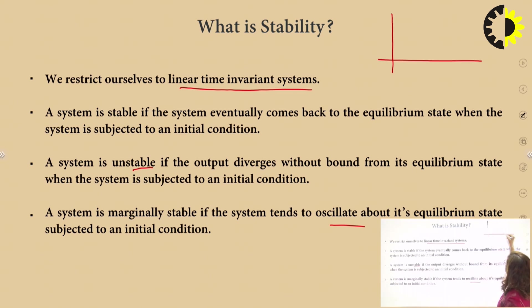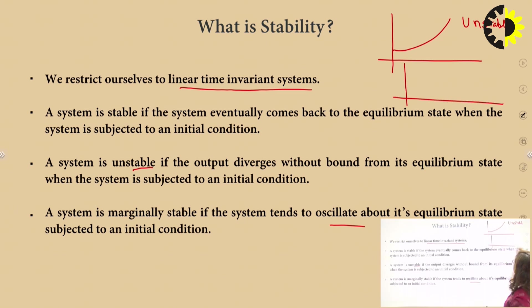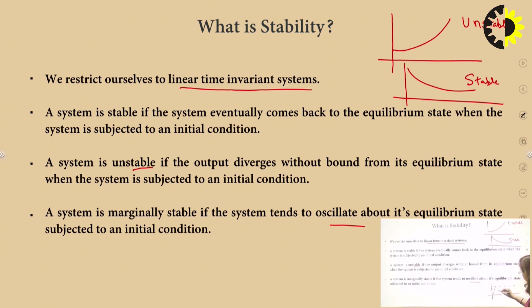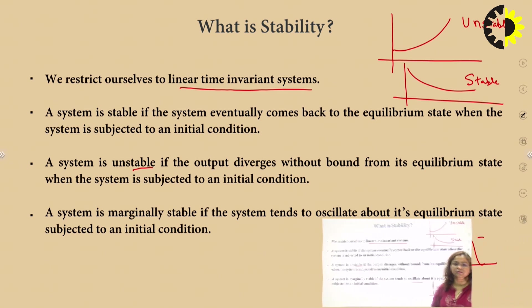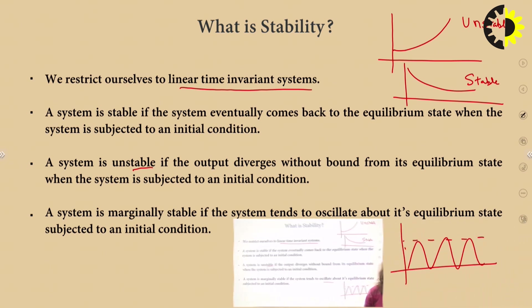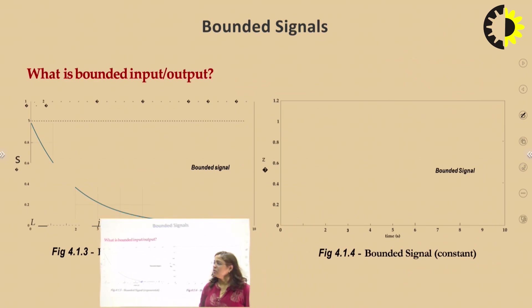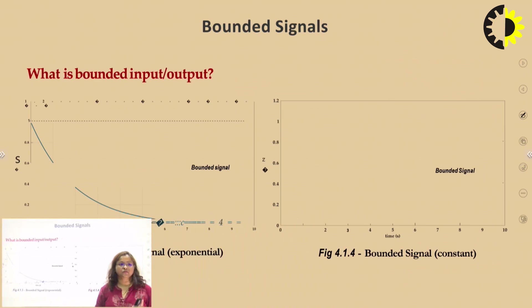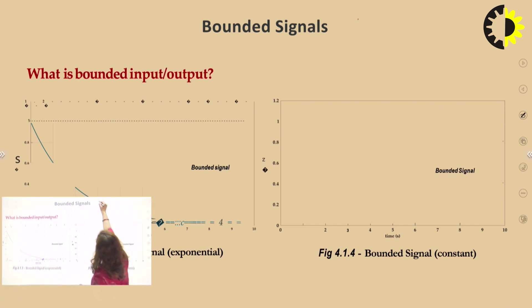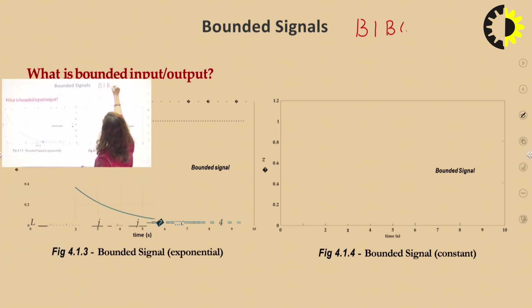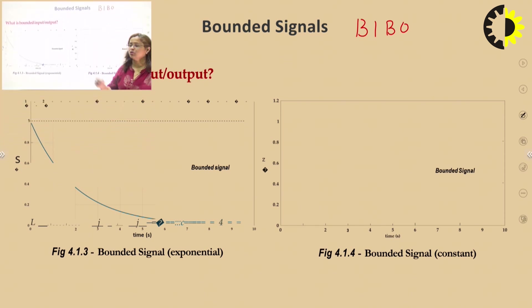So if you plot the response of the system: if the response is of growing nature then the system is unstable; if the response oscillates within a constant bound then it is termed as marginally stable. For LTI systems we test for two types of stability — BIBO stability (bounded input bounded output stability) and asymptotic stability.